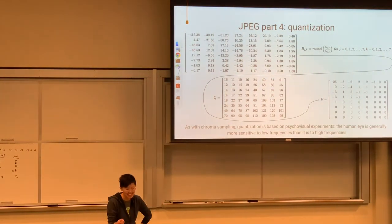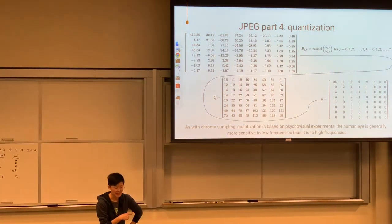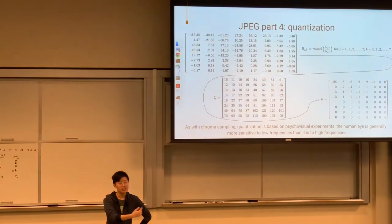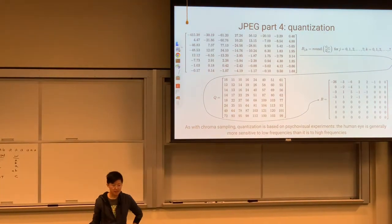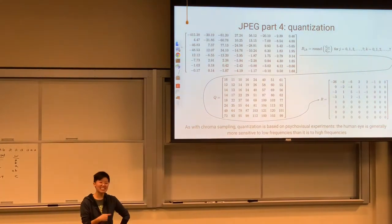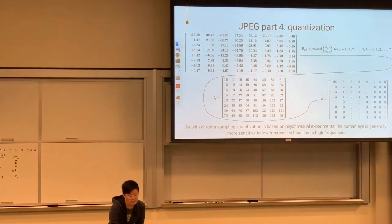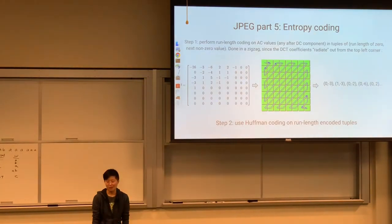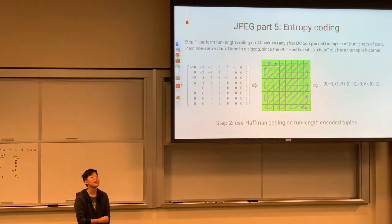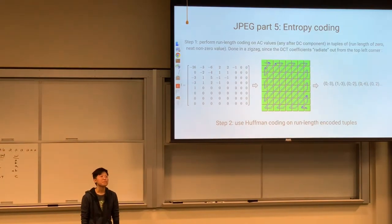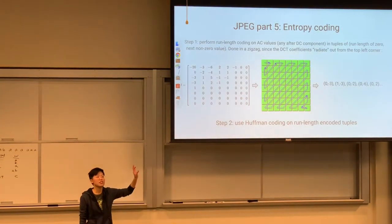A fun fact: the Discrete Cosine Transform is not the only option — the Discrete Wavelet Transform actually gives better results and avoids blocking artifacts. But when JPEG was developed in the 80s, hardware was too slow to run the wavelet transform in reasonable time, so they went with the DCT. After quantization, JPEG uses run-length encoding: because these quantized DCT matrices don't have much information in the right-hand and bottom regions, there are lots of zeros which can be efficiently run-length encoded.